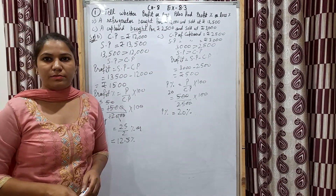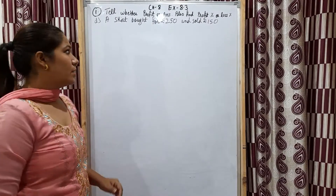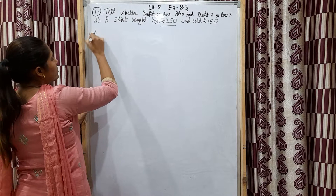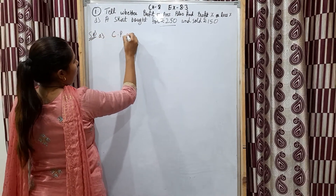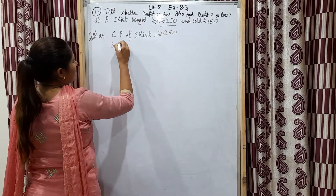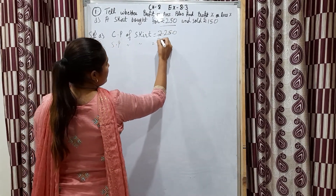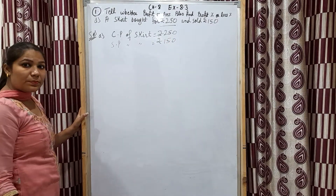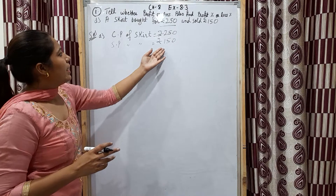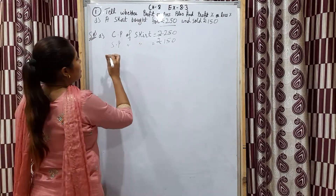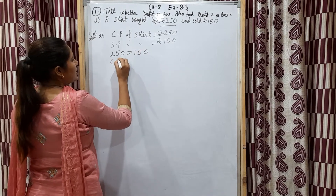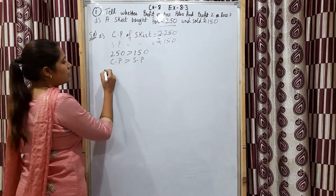Now we will do D part: a skirt bought for rupees 250 and sold for rupees 150. We write given: cost price of skirt is rupees 250, selling price of skirt is rupees 150. CP is greater. This is a change from parts A, B, and C where SP was greater. Here CP is greater: 250 is greater than 150, which means cost price is greater than selling price.